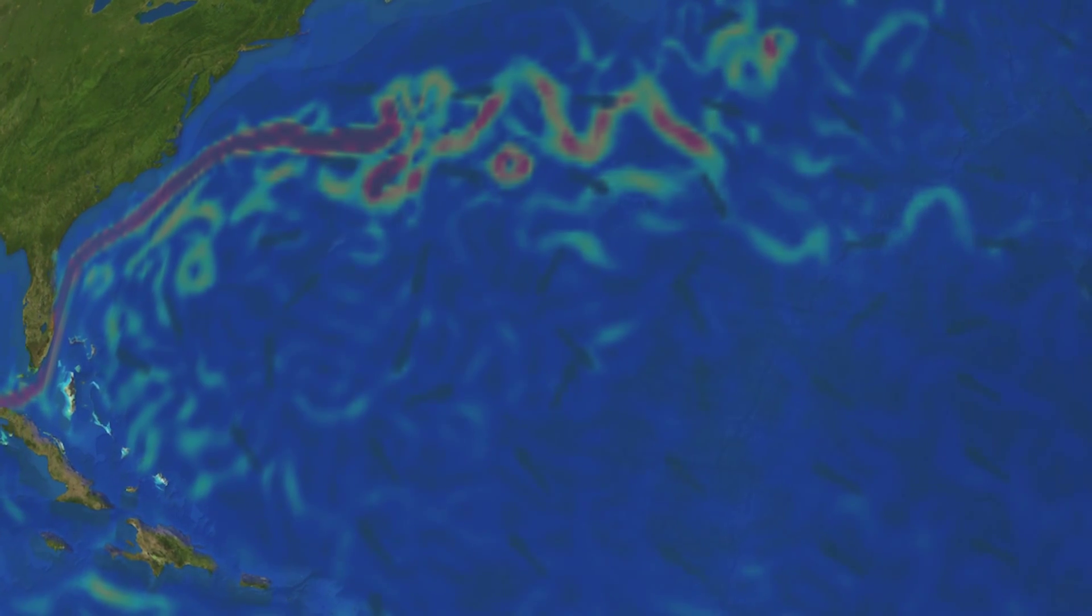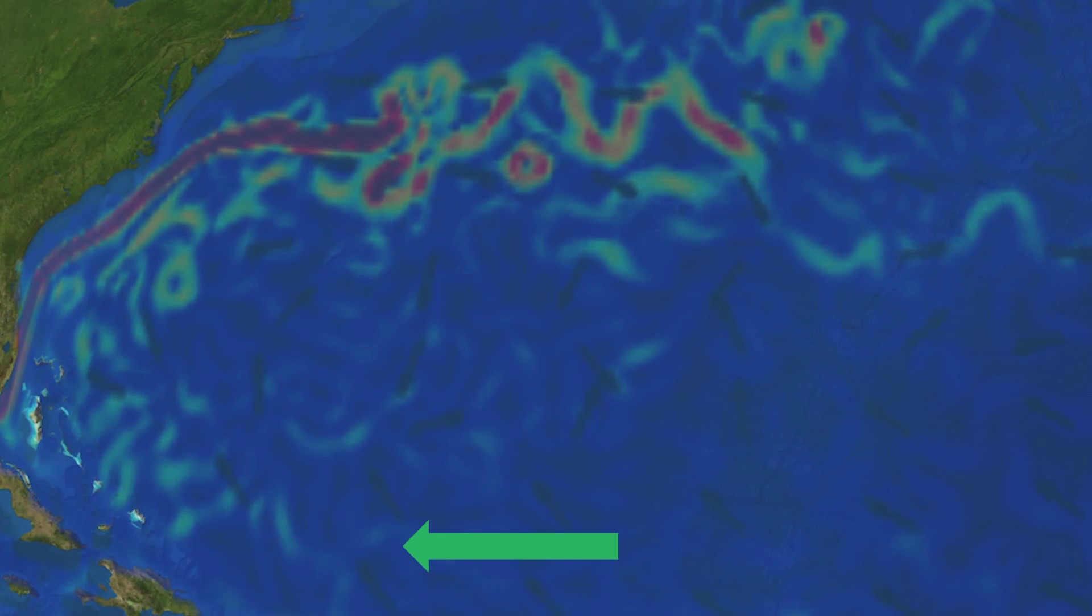Here we zoom in on the North Atlantic Gyre and consider first the trade winds. These winds blow towards the west on the southern boundary of the domain under consideration. Due to Ekman transport, the water is deflected to the right.